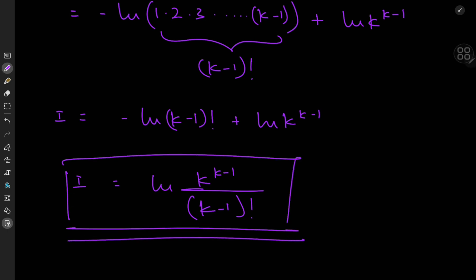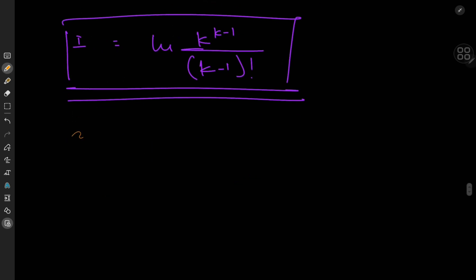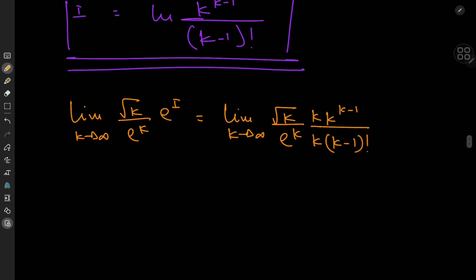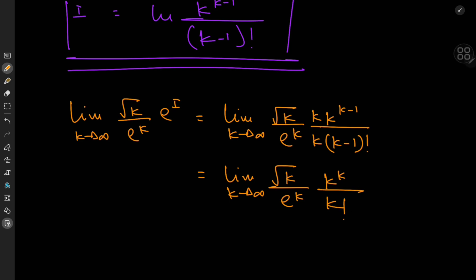Returning to the original limit problem, we had the limit as k tends to infinity of root k over e to the k, times e to the integral I. Since I is a logarithm, the exponential and logarithm cancel as inverse functions, giving us the limit as k tends to infinity of root k over e to the k, times k^(k-1) divided by (k-1)!. Expanding by k, this becomes root k times k^k divided by e^k times k factorial.